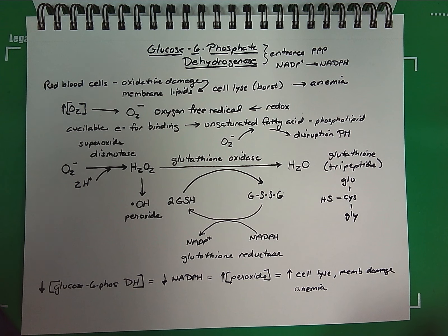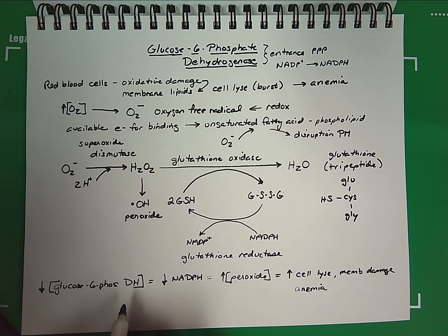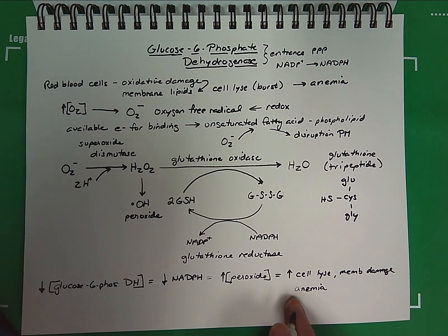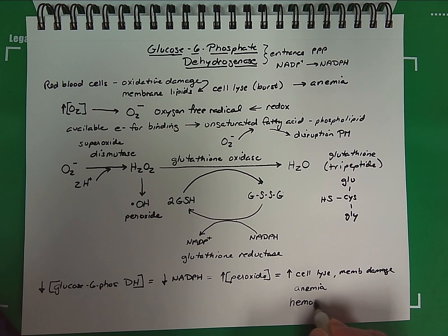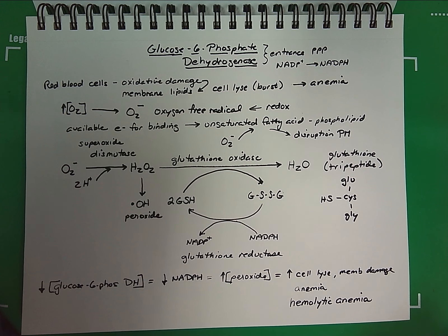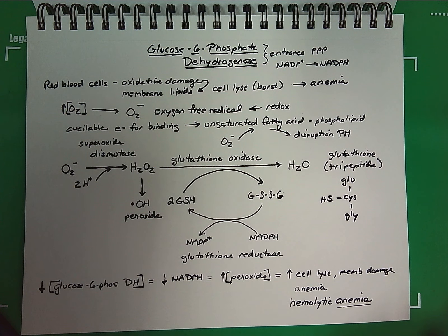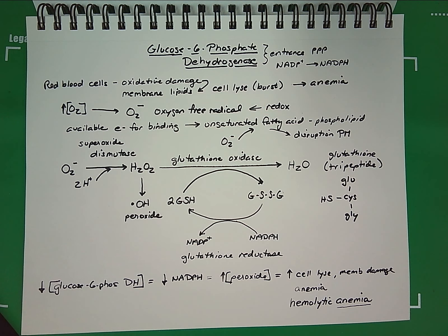If this specifically occurs in red blood cells, which are very sensitive, the individual will suffer from anemia — all due to a glucose 6-phosphate dehydrogenase deficiency. The specific type of anemia is designated as hemolytic anemia: anemia meaning a lack or reduced amount of red blood cells and oxygen-carrying capacity, and hemolytic referring to the lysis of red blood cells. This anemia is specifically due to the loss of red blood cells and thus the loss of oxygen-carrying capacity through lysis.